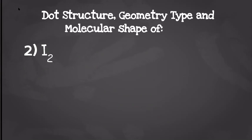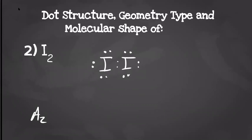For our next molecule we're working with an iodine molecule. Each iodine is going to have seven valence electrons, so our dot structure should look something like this. Because it is diatomic, it's going to have a geometry type of A2, and that's going to give us a molecular shape of linear. Again, we have to see how they are pulling the electron pair they are sharing, and because it is diatomic they're going to be pulling equally, so it's going to give us a non-polar molecule.